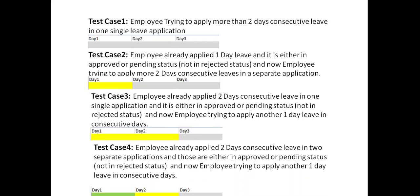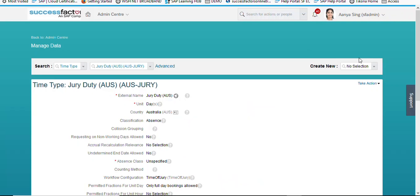Test case four: employee already applied two days consecutive leave in two separate applications. Day one is already approved, day two is not approved yet but is in pending status. Now employee is trying to apply another one day leave which is also a consecutive day — three separate leave of absences overall. As it is also more than two consecutive days, the system should restrict the employee from applying such leaves. Let's go into the system and see how to create these Take Rules.